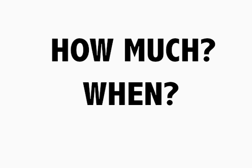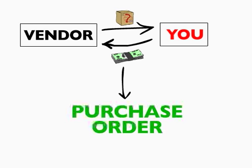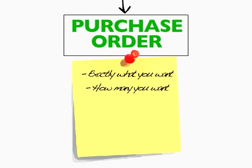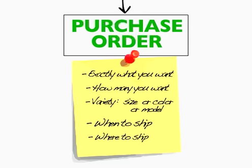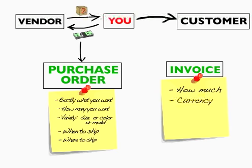These and many other questions are answered by the exchange of standardized documents. When telling a vendor that you want them to send you product in exchange for money, you use a purchase order. That purchase order contains specific information, like exactly what items you want and how many of them you want. It will specify the variety in terms of size, colour, or model. It will tell you when to ship these goods and where they should go. Similarly, when you want to get paid, you send your customer an invoice. This tells them how much, in what currency, and by when they should pay you.